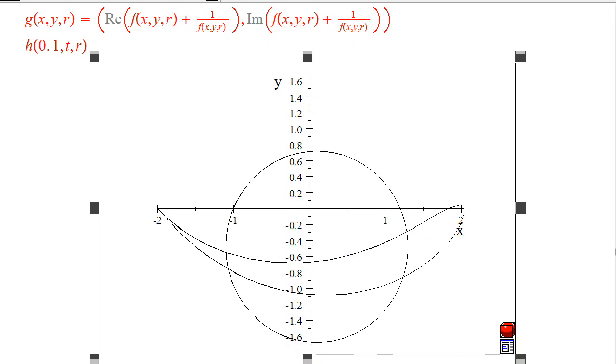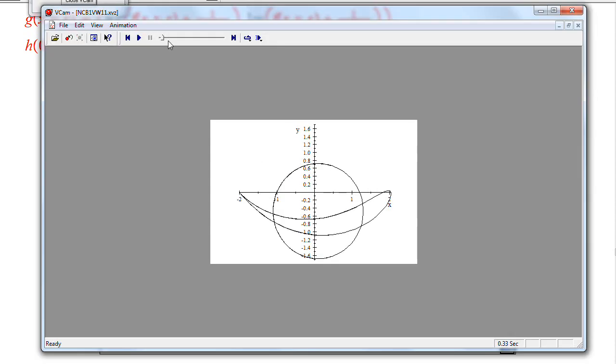So, now it looks better. So, for different center values, we get different Joukowsky airfoils. And you see how you can change this animation into whatever you like.